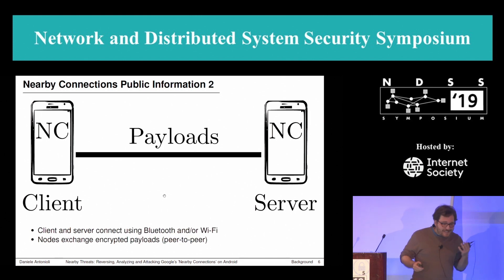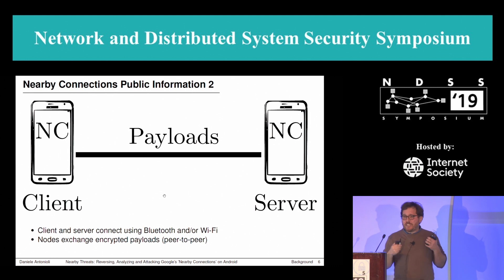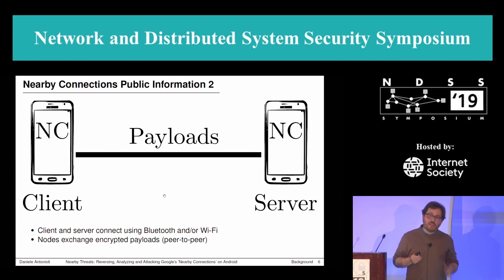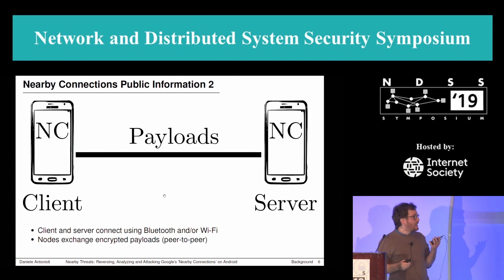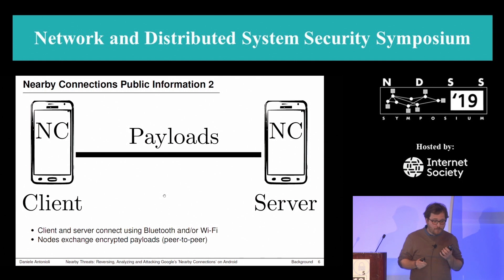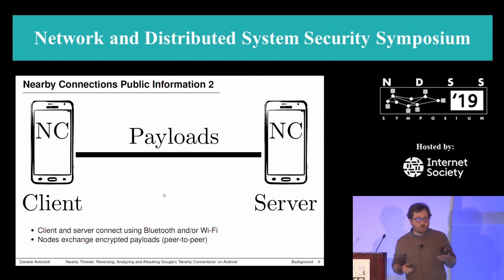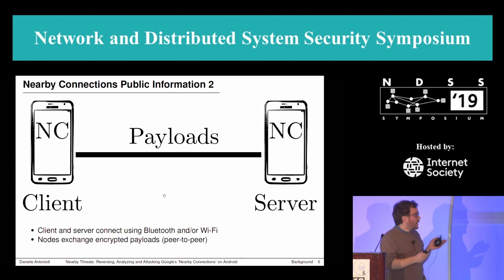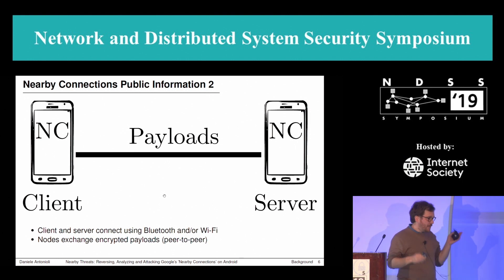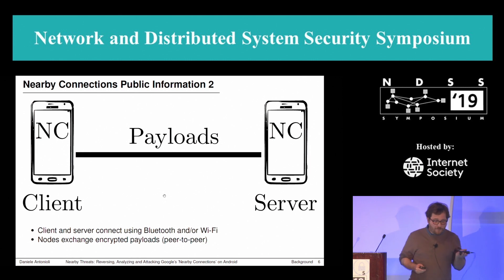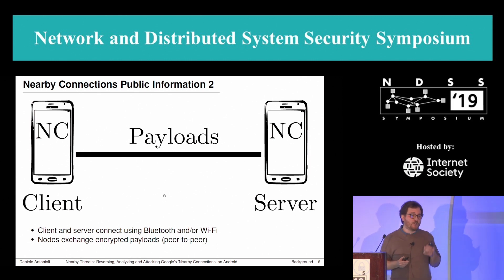The client and server, once they find each other, establish an application layer connection and start exchanging encrypted payload. The connection is established using a combination of Bluetooth and Wi-Fi. But at this point we did not know the details of the evolution of a Nearby Connection, and we decided to reverse engineer its Android implementation.